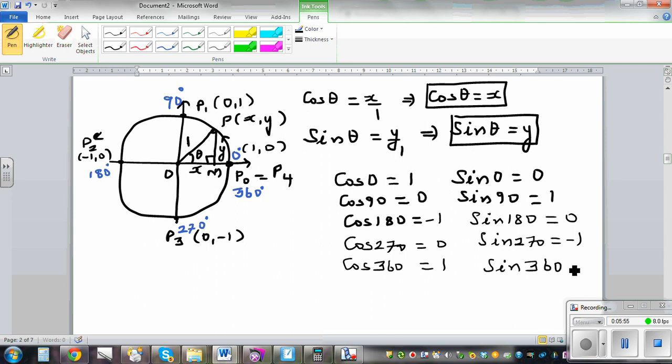And that's why the sin graph starts at 0 and ends at 0. The maximum is 1. Minimum is negative 1. A cos graph starts at 1, finishes at 1. Maximum is 1. And minimum is negative 1. The baseline is 0 in both the cases. So what else can you see here in this relationship?